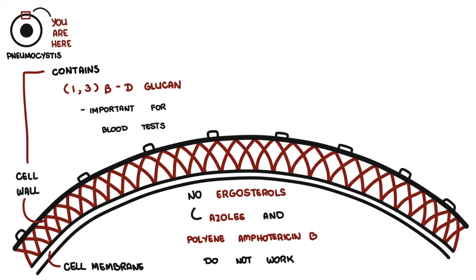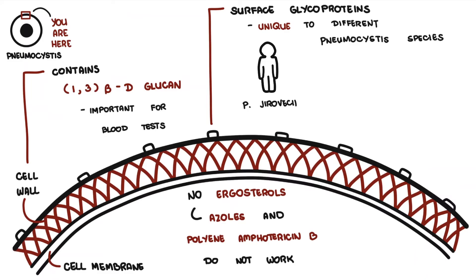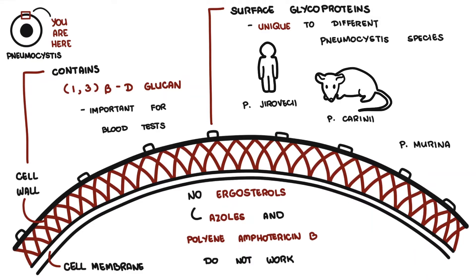Pneumocystis organisms carry a variety of surface glycoproteins, which are actually unique to different Pneumocystis species. For example, there are many Pneumocystis species, and each of these species actually infects only specific mammals. For humans, it's Pneumocystis jirovecii, which infects only humans. Then you have Pneumocystis carinii, which only infects rats, and Pneumocystis murina, which only infects mice.